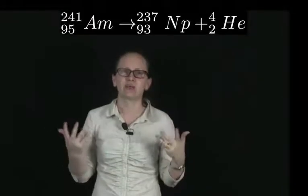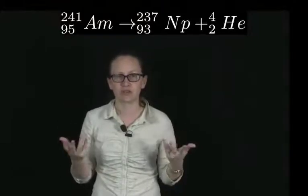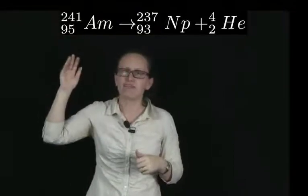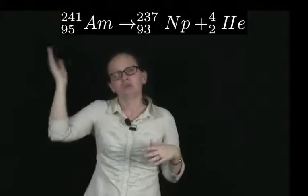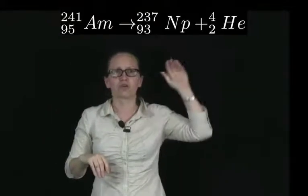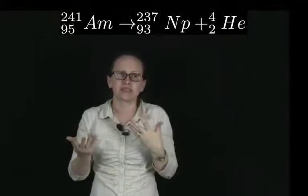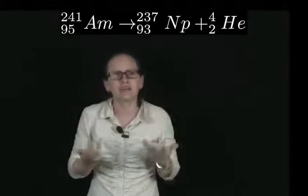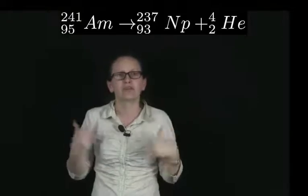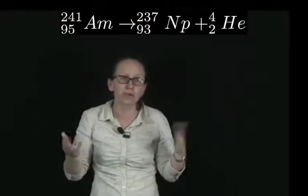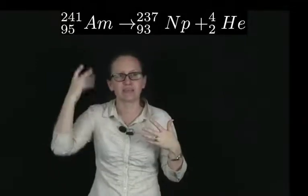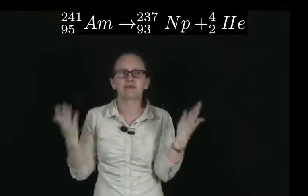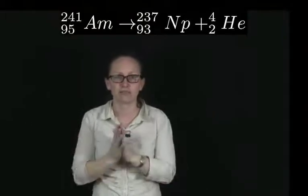So americium-241 is a source of alpha radiation. For practice, let's write down the equation of the decay of americium-241. We can write this as 241-95-Am turns into an alpha particle, which is 4-2 helium. The atomic number needs to be 95 minus 2, so 93. The 93rd atom is neptunium, so we have Np as the symbol that is used for neptunium. The mass number needs to be 241 minus 4, so that gives us 237.